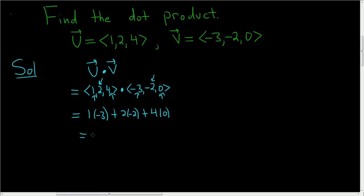So we end up with negative 3 minus 4 plus 0. So negative 3 minus 4 is negative 7, and we add 0 to that, and the result is still negative 7.